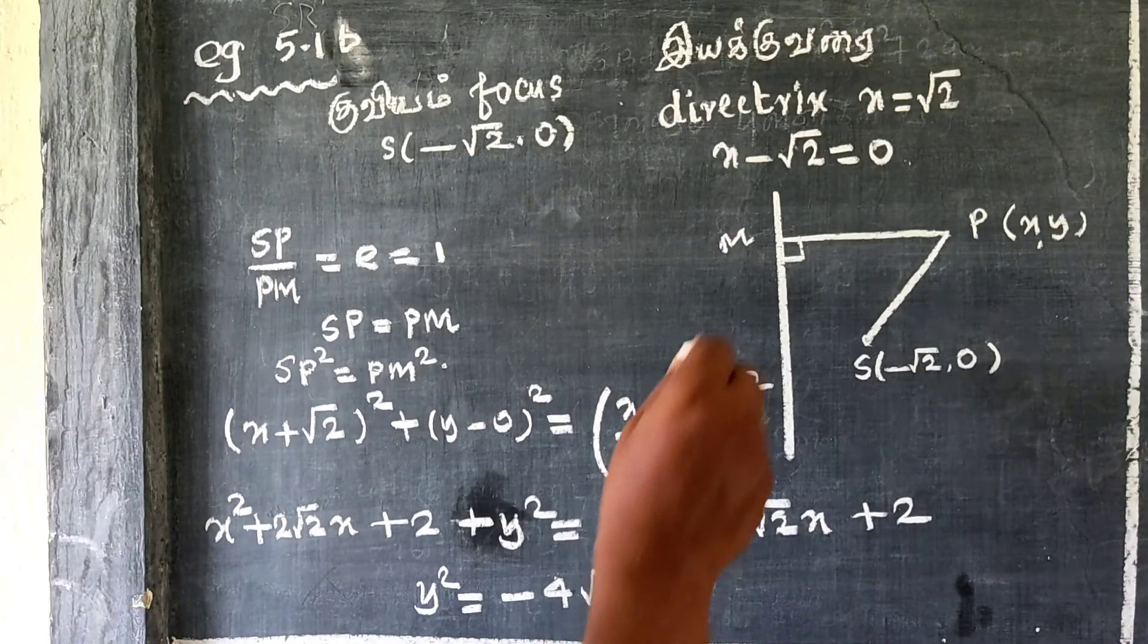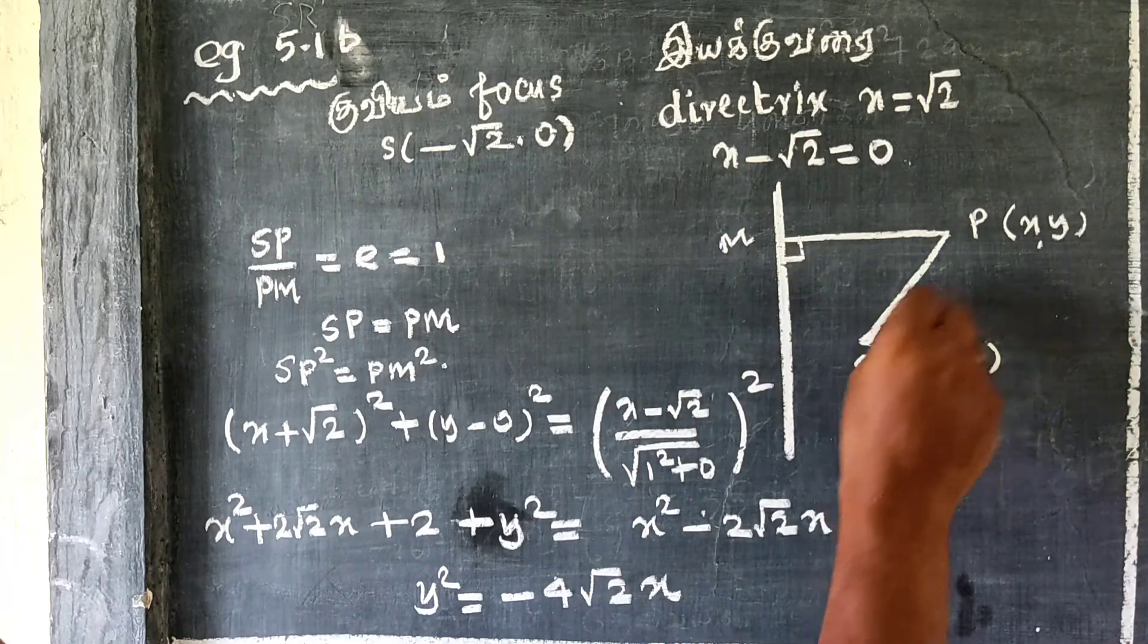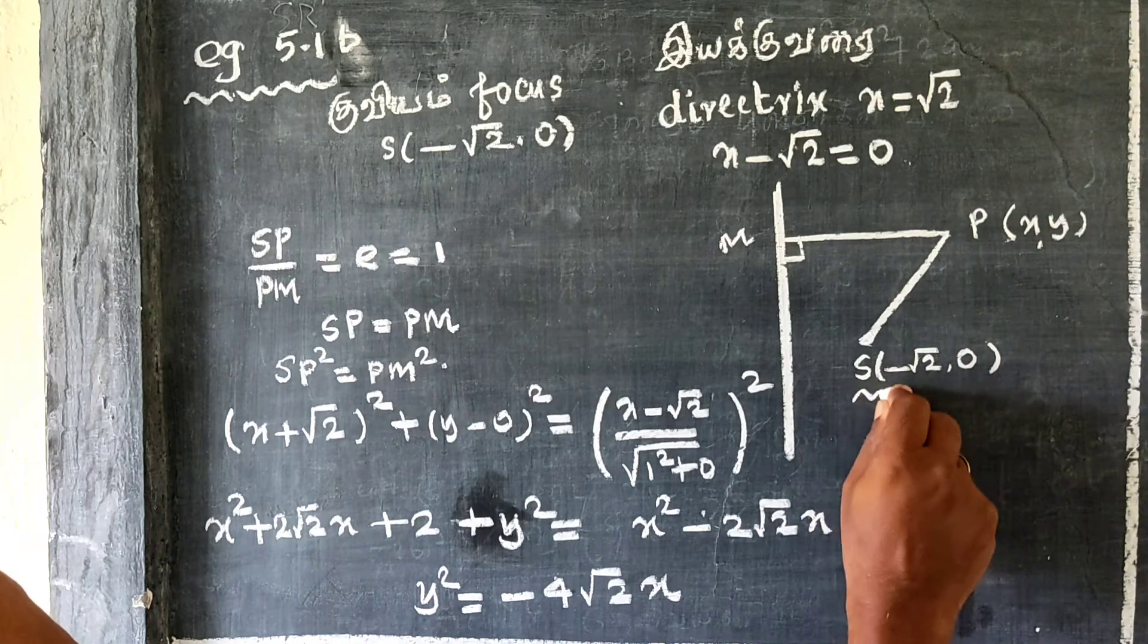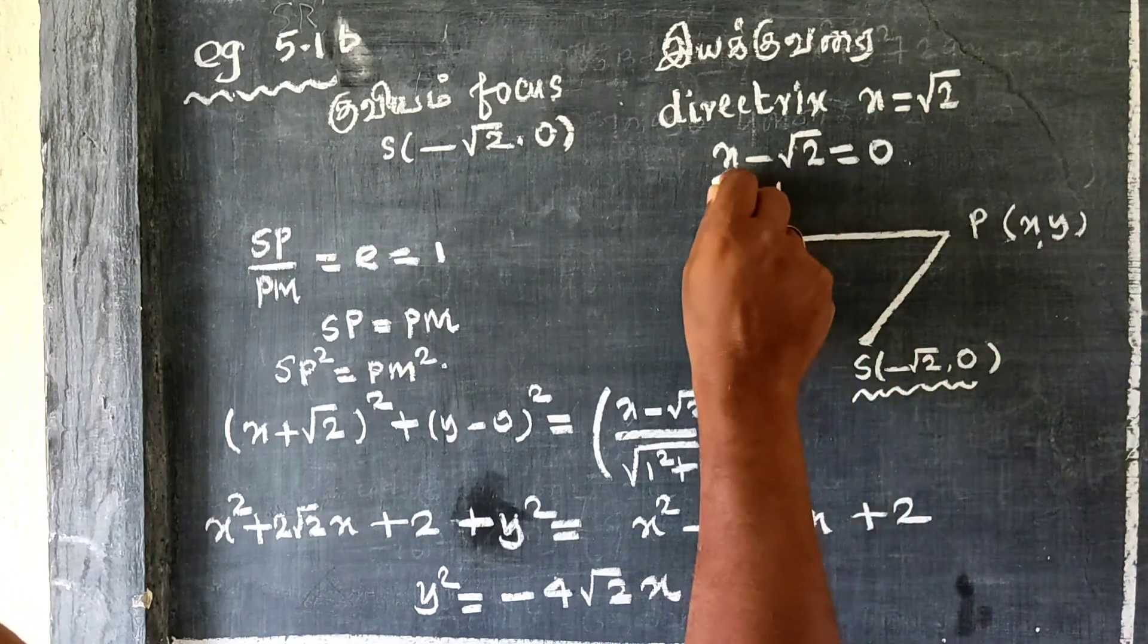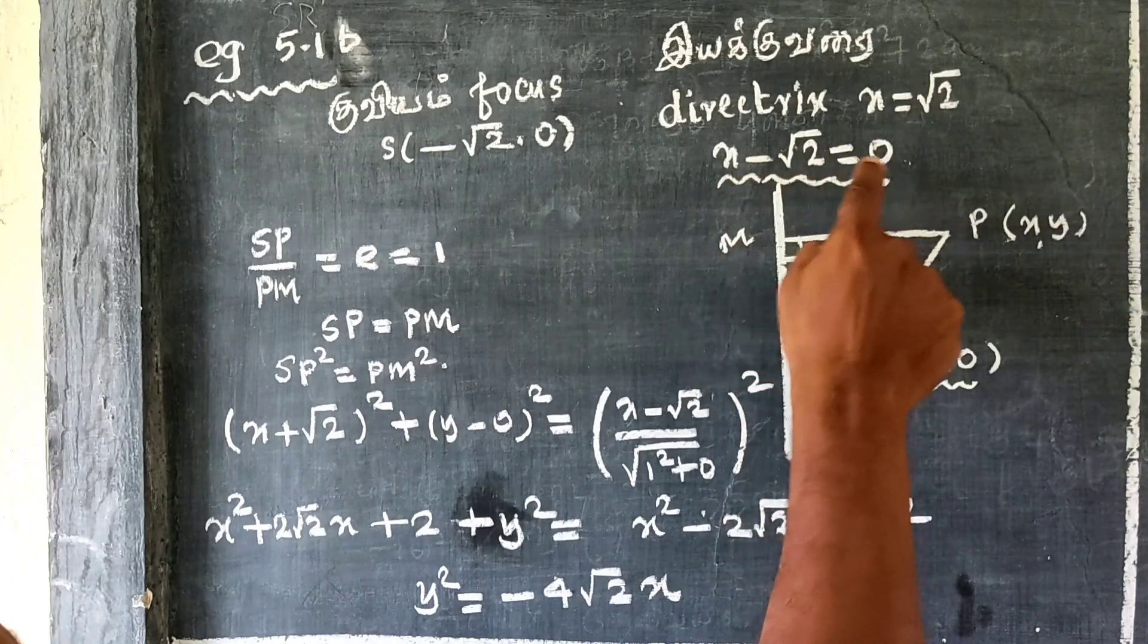Let's look at the general formula. The focus is at (-√2, 0). The directrix equation is x = √2, so x - √2 = 0.